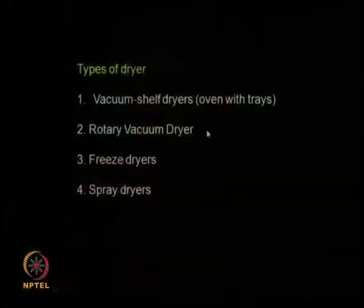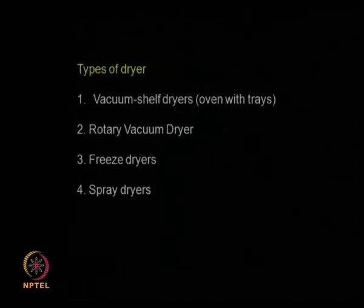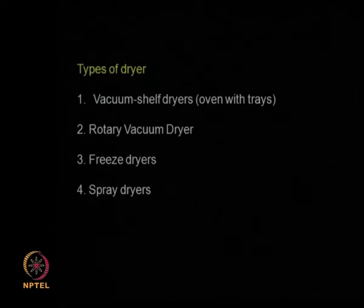Another type of dryer is the rotary vacuum dryer. As the name implies, there is a rotary drum which goes round and round, a vacuum is applied, and heat is also applied. The vacuum and the heat remove whatever moisture is present and dry the product. The other type is the freeze dryer — you are applying very low temperature so that the water becomes ice, and the solid ice is removed. That is called freeze drying.